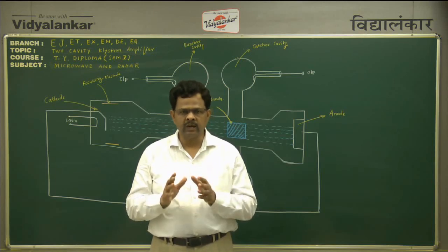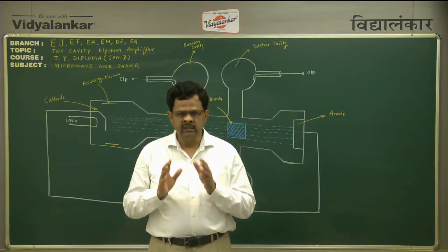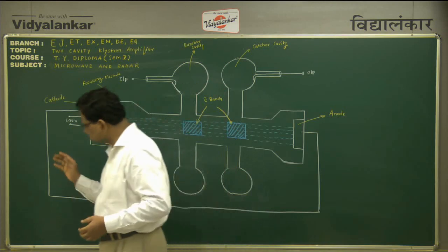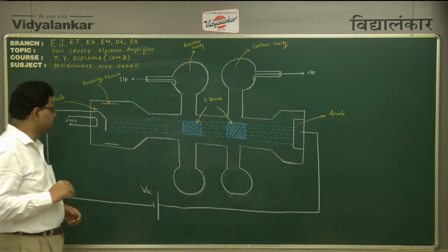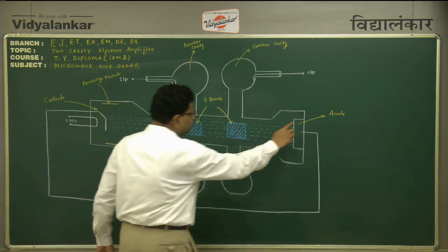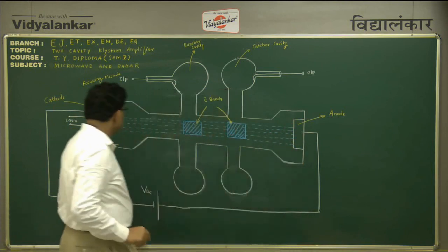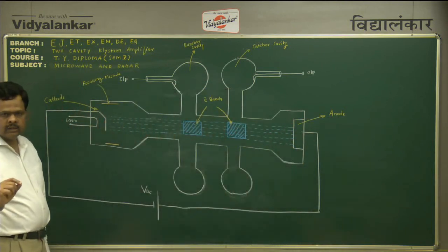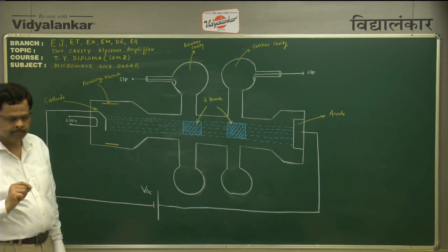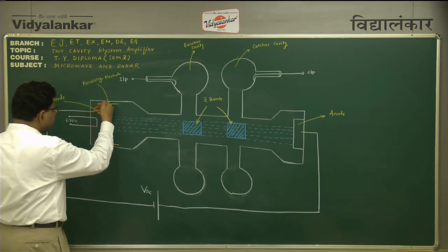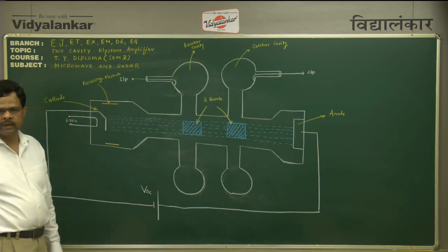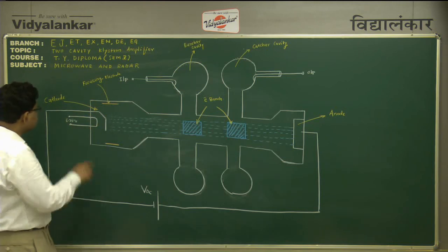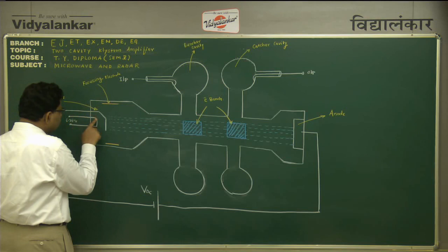Today I will give you the brief introduction about two-cavity klystron amplifier, which is used to amplify the weak microwave signal. The two-cavity klystron amplifier is basically a vacuum tube amplifier. It consists of an anode and a cathode. The cathode is cylindrical in shape and its outer body is coated with barium oxide.